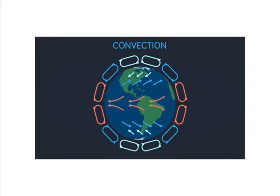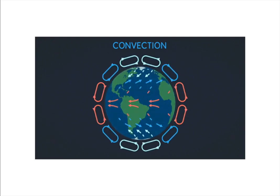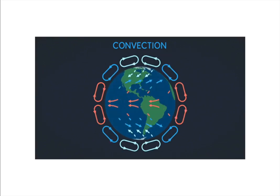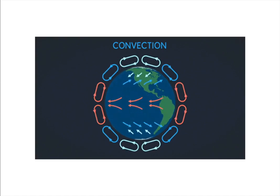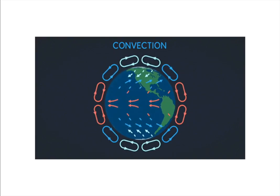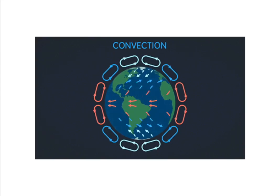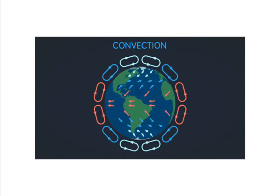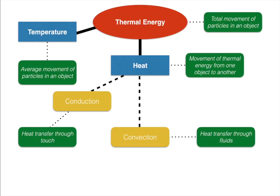We see convection on a large scale on Earth. Warmer air at the equator rises and moves toward the poles, where it cools and sinks, and then moves back toward the equator — creating global convection currents of wind and temperature. Earth also has convection currents in the mantle that move tectonic plates around, which you'll explore in eighth grade Earth science — or check my YouTube playlist on plate tectonics.